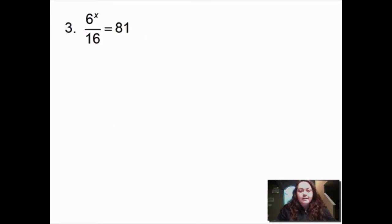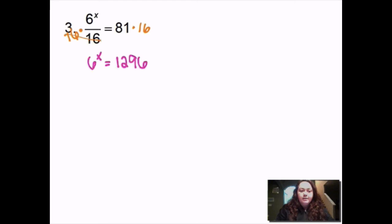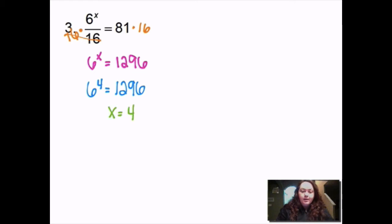This one: 6 to the x divided by 16 equals 81. I want to get x by itself, so I have to get rid of the divided-by-16 piece by multiplying by 16 on both sides. That leaves me with 6 to the x equals 1296. Well, 6 to the 4th equals 1296. Therefore, x equals 4.